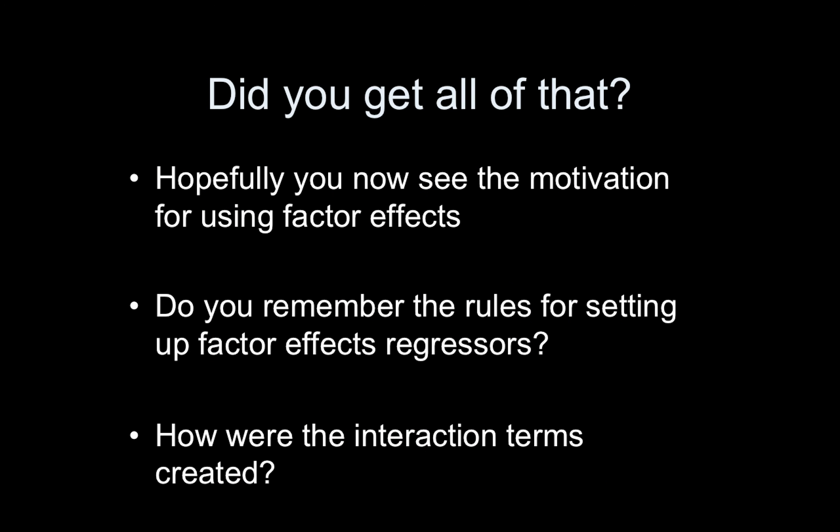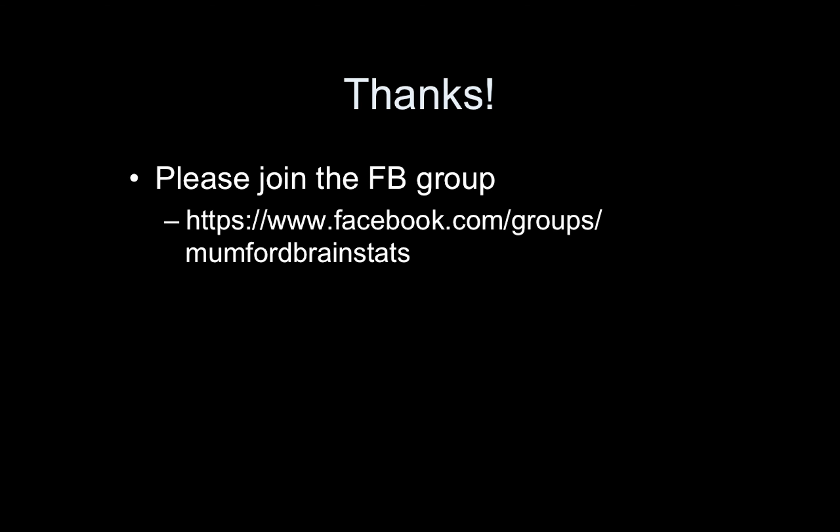All right, hopefully you got all that. And hopefully now you see the motivation for using factor effects. Basically, it's when you want to run hypothesis tests for your traditional ANOVA hypotheses for main effects and interaction effects. And I think especially the interaction effect you're going to want to do. If you're modeling an interaction, you're going to test it. Do you remember the rules for setting up the factor effects regressors? So hopefully you remember where the 1s, minus 1s, and 0s go. And also it's important to remember how the interaction terms are created. Thank you so much. Please join the Facebook group, Mumford Brain Stats. And I hope you have a wonderful day.